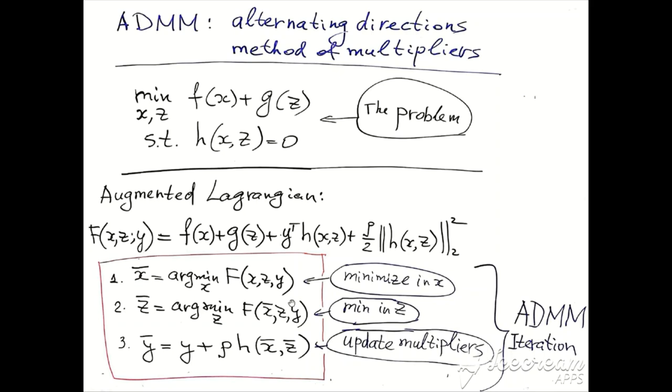The efficiency typically comes from the fact that optimization in X and separate optimization in Z may be carried out in a much more efficient way than joint optimization. Quite often, as we will see in the example of the LASSO problem, it even may be carried out analytically.